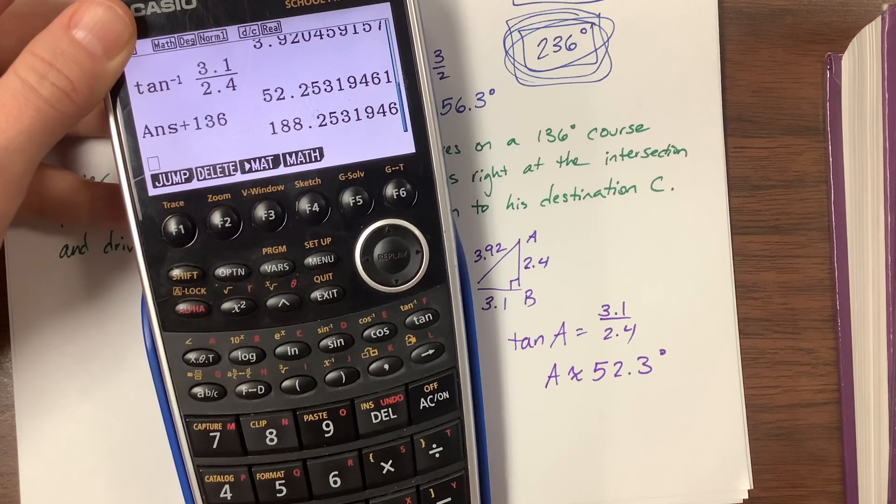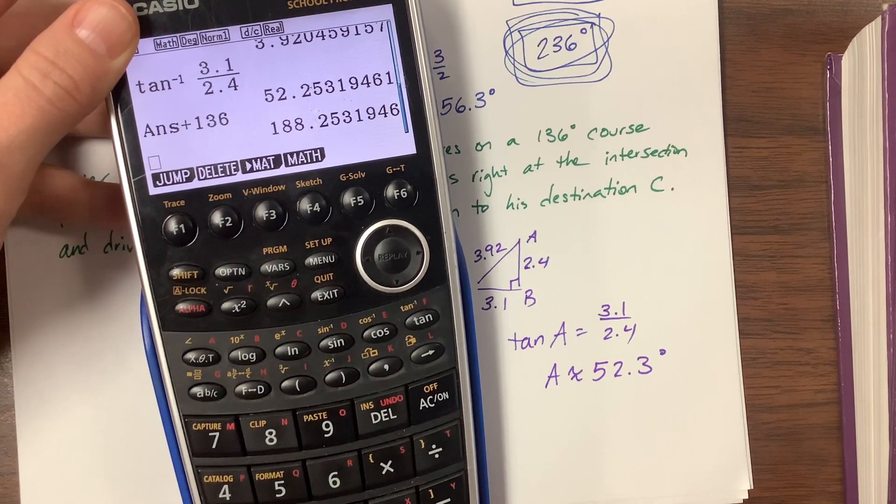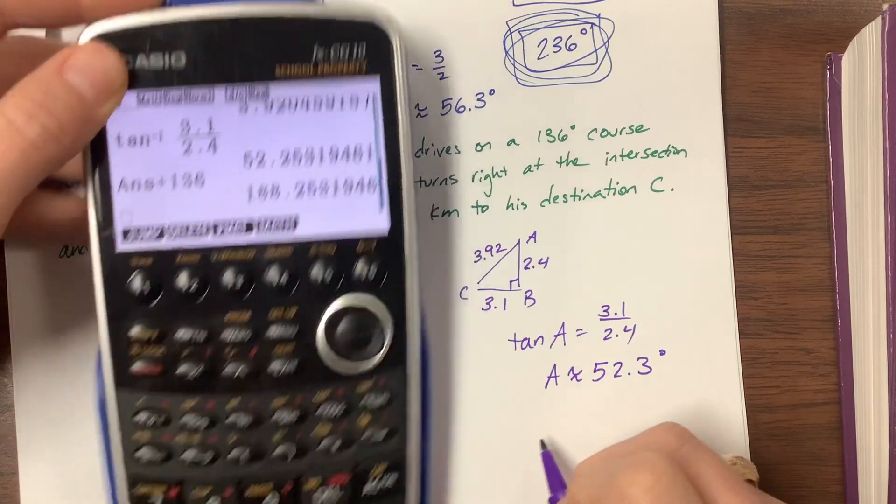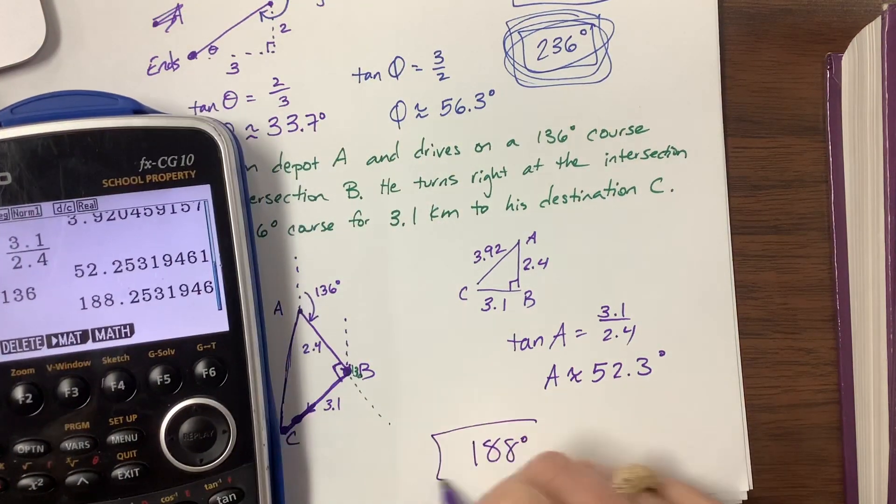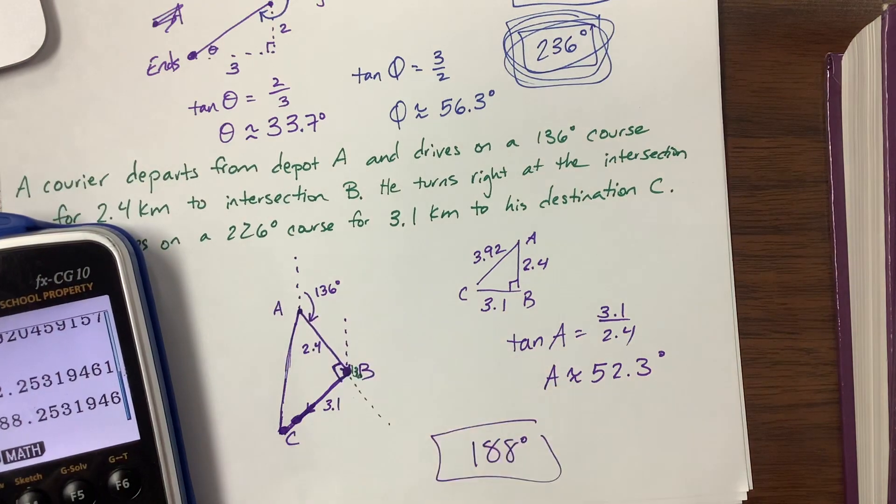And I'm at 188.3, but we'll keep it with three sig figs. So it's a 188 degree bearing from here, from A to C.